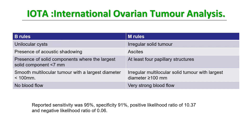Malignant features — M-rules — include an irregular solid tumor, presence of ascites, at least four papillary structures, irregular multilocular solid tumor with largest diameter more than 100 mm, and very strong blood flow on Doppler. This favors malignancy. It's very logical and easy to remember.